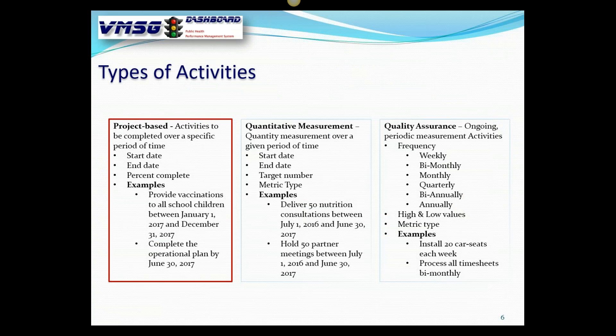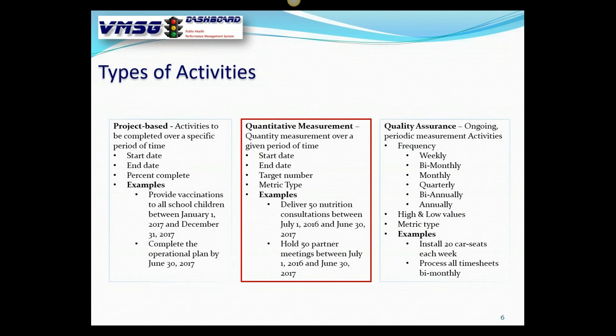There are three types of activities. Number one is the simple project-based activity. Number two is a QM activity — Quantitative Measurement — where you have a finite number to measure against. For example, a WIC clinic tasked with 50 nutrition consultations during the fiscal year. When the email goes to the WIC clinic manager asking how many consultations were done last month, they enter a number — say 5. It adds to prior months, so maybe 20 plus 5 divided by 50 says we're halfway done, and you can determine whether you're ahead of or behind schedule.